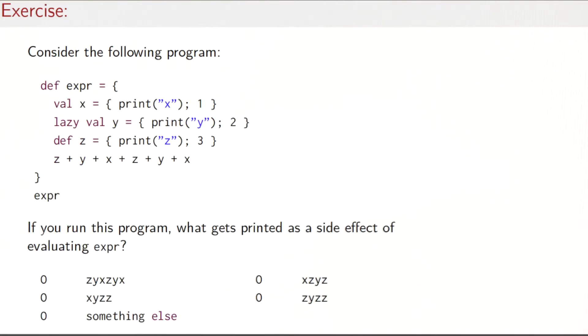Let's test this understanding with an exercise. Consider the following program: we have a function expr and it defines three values x, y, and z. Each definition is preceded by a print statement that prints that the definition is now evaluated. And then finally we have an expression that makes use of x, y, and z: it does z plus y plus x plus z plus y plus x. If you run this program, what gets printed as a side effect of evaluating expr?